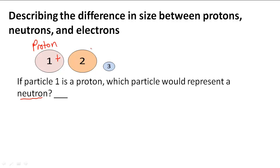And here, because we know that a proton has the same mass or a little bit less mass than that of a neutron, we know that 2 has to be the particle that we're talking about.